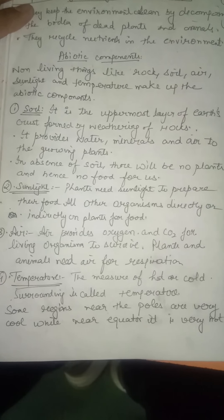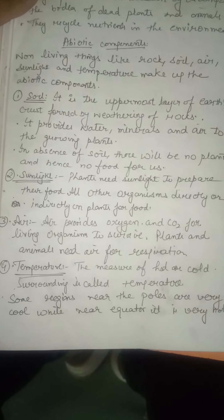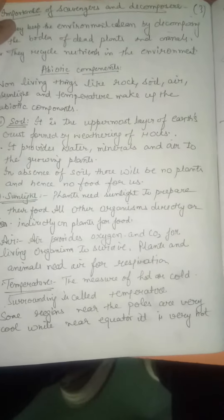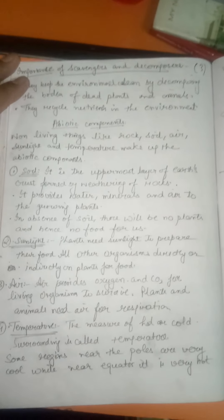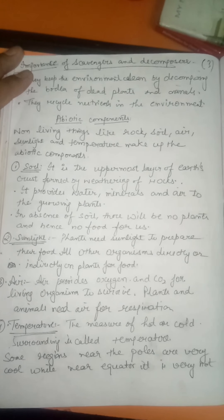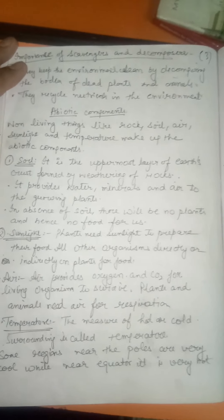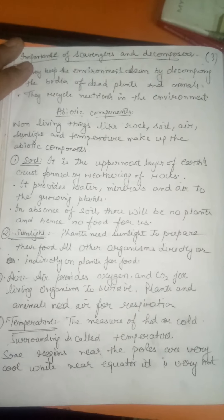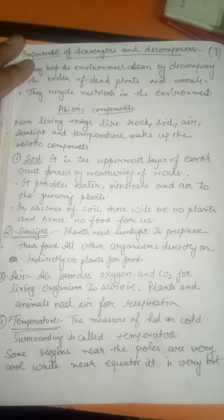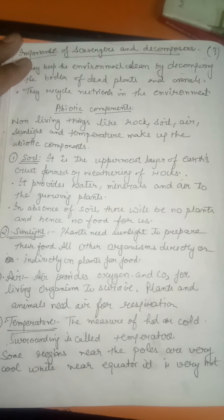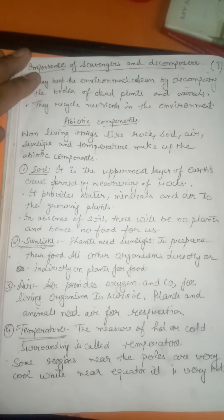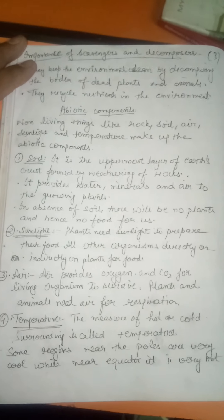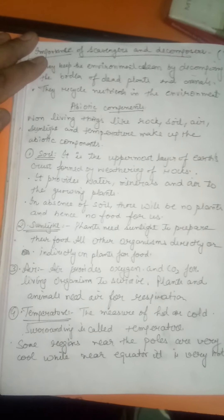The next abiotic component is temperature. Temperature is the degree of hotness or coldness of the surroundings. It is measured using different scales: the Fahrenheit scale, the Celsius scale, and the Kelvin scale.